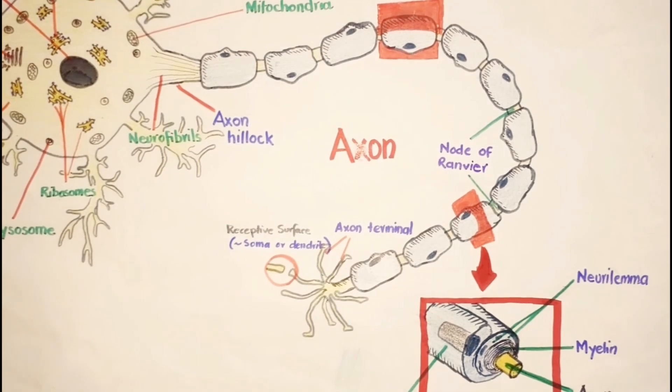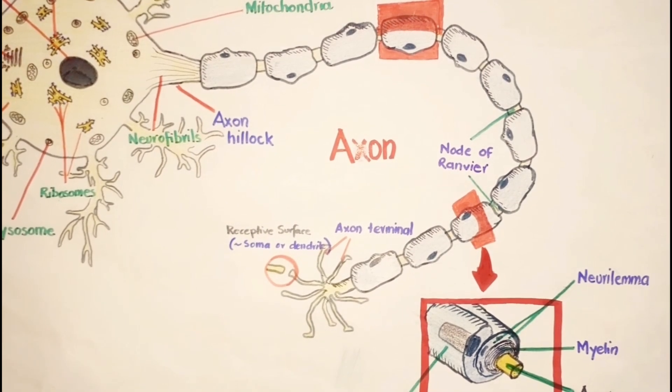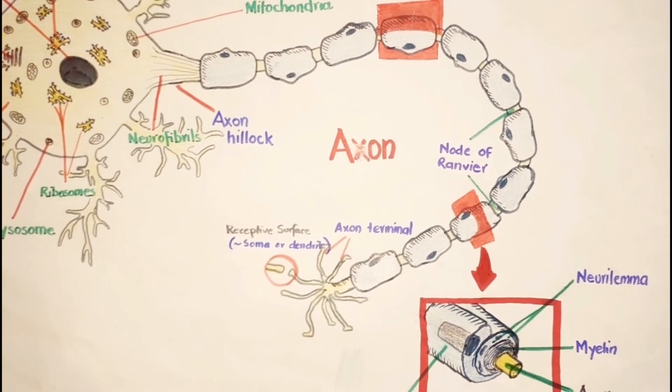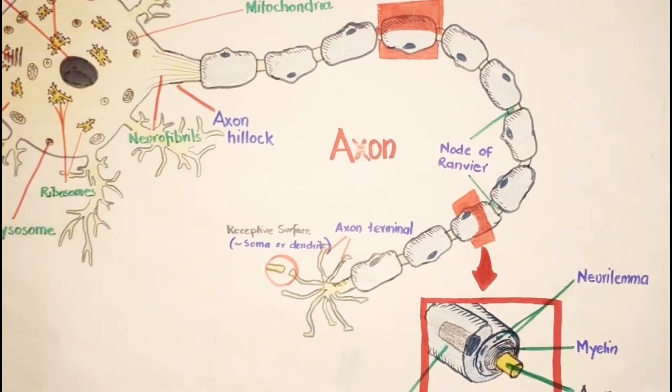Axons with myelin sheath are called myelinated and those that lack sheath are unmyelinated.